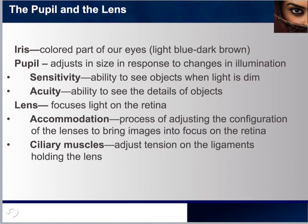In a healthy individual, the ciliary muscles adjust the tension of the ligaments holding the lens, allowing it to bend. However, due to genetic predisposition, the lens can become thick, making it harder for the ciliary muscles to bend it — causing problems with accommodation and acuity. Sensitivity is not compromised by a thicker lens, only acuity. Individuals with this condition may be eligible for laser eye surgery, where the lens is shaved down to allow the ciliary muscles to work properly.